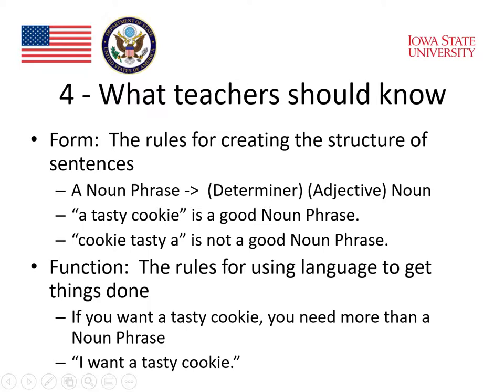The distinction between form and function is also very important. Form refers to the rules for creating the structure of sentences. For example, a noun phrase is created by putting together a determiner, an adjective, and a noun — though the determiner and adjective are actually optional, so you can have a noun phrase with just a noun. A phrase like 'a tasty cookie' is a good noun phrase with all those parts in order, whereas 'cookie tasty a' is not a good noun phrase according to those rules of form.